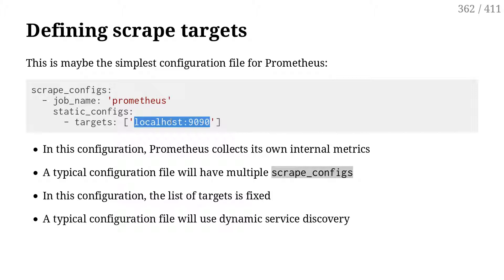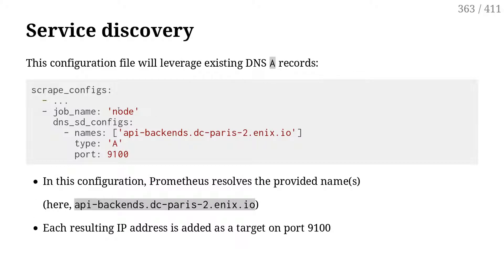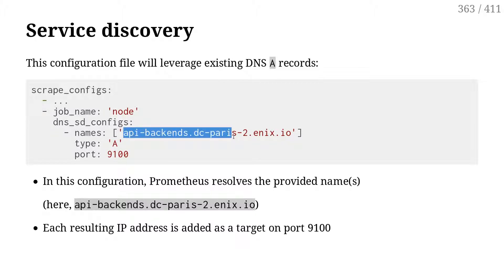This is an example using static configuration. But this is an example of dynamic service discovery. In that case, we use DNS. Let's say we deploy stuff in data centers, and we agree with the deployment team that each time you rack a server, you should add the server to the DNS. Then the observability and metrics team will use the DNS information to know what to graph. Here, for instance, we say we should graph all servers corresponding to the DNS name api-backends.dcparis2.nx.io.